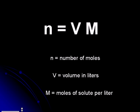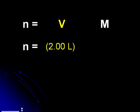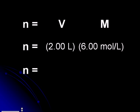In this problem, we are asked for the amount of solute in 2.00 liters of 6.00 molar acetic acid. Therefore, the amount of solute in moles is equal to 2.00 liters times 6.00 moles per liter, or 12.0 moles.